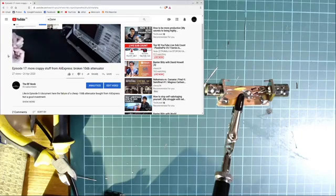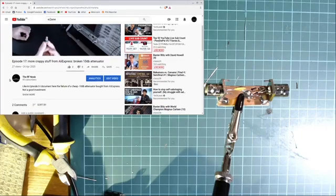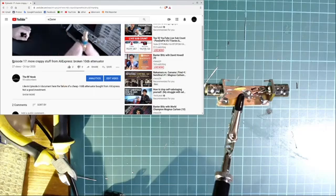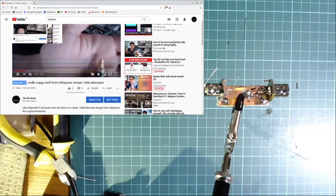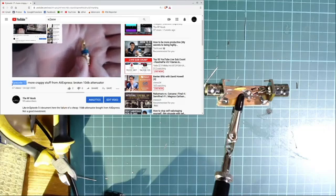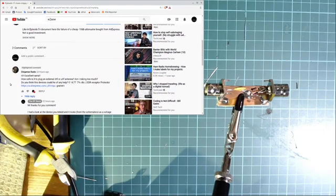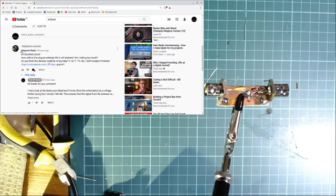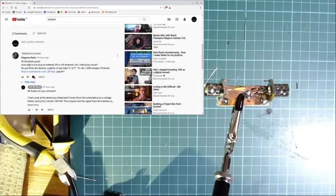Hi and welcome back to my channel. In one of my previous episodes, episode number 17, I showed how a very cheap 10 dB attenuator from China broke down. One of the viewers of this channel, Diogenes Radio, asked if it was safe to plug a VHF and UHF antenna into his SDR.